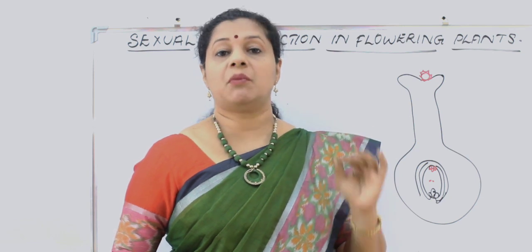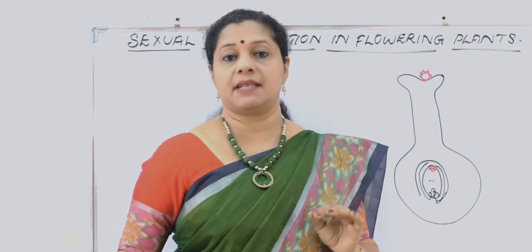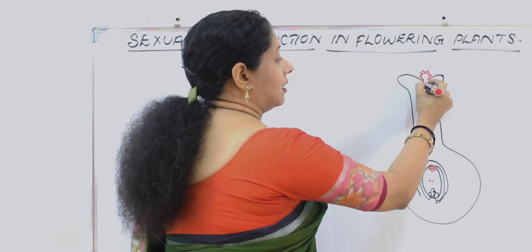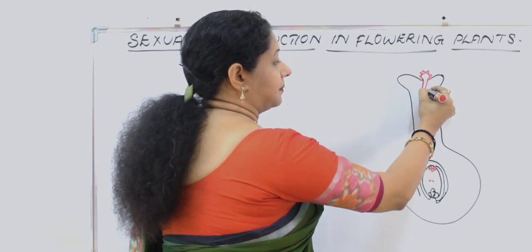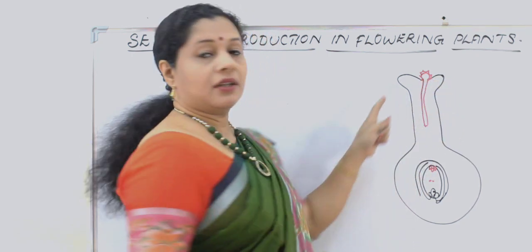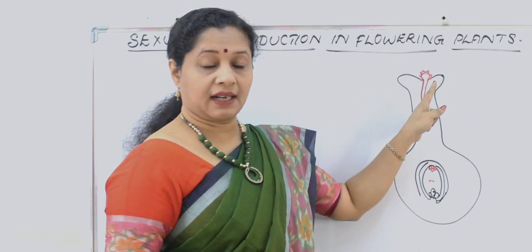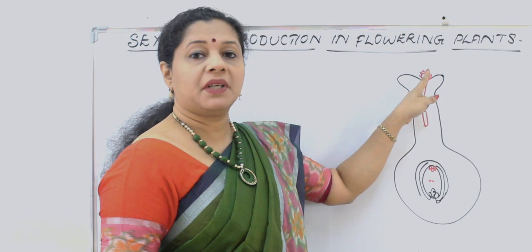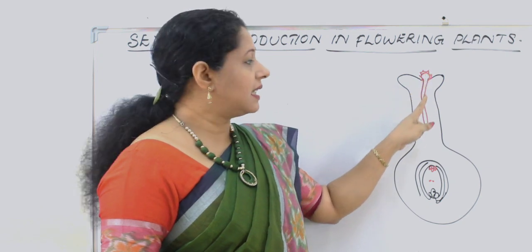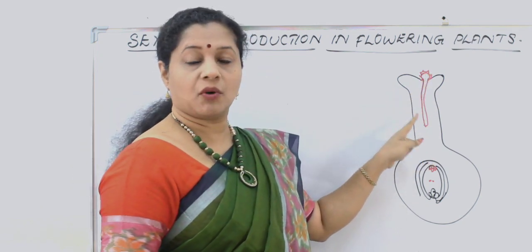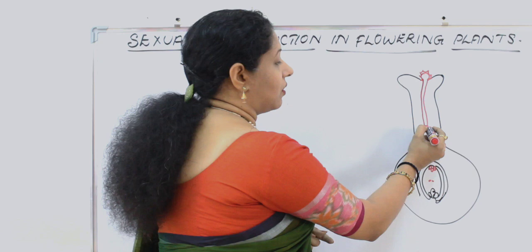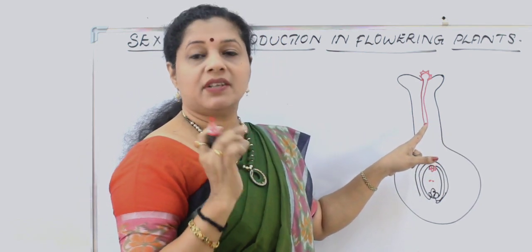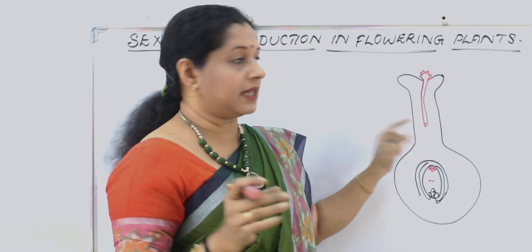If it is a suitable or competent pollen, the pollen tube will germinate through the style. The exine is the outer covering and it has germ pores. Through the germ pore, the vegetative cell comes down, forming the pollen tube. It has the tube nucleus at the tip — the nucleus of the vegetative cell — which acts as a guiding nucleus.